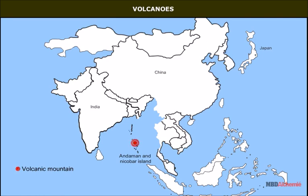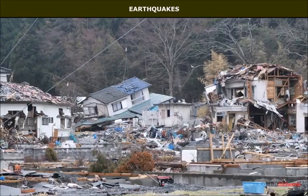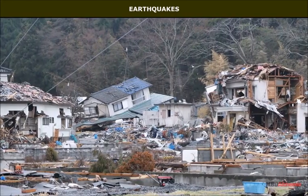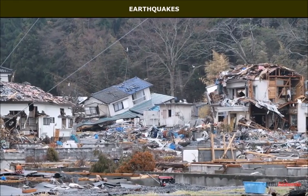Mount Fujiyama in Japan is a good example of a volcanic mountain on the surface of the land.